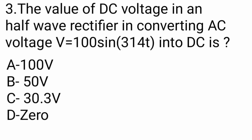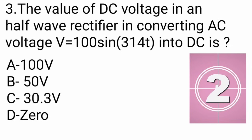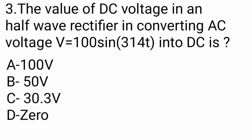Question number 4: The value of DC voltage in a half-wave rectifier, converting AC voltage V equals 100 sin(314t) into DC. Options are 100V, 50V, 33.3V, and 0V. The answer is 33.3V.